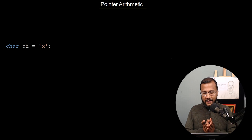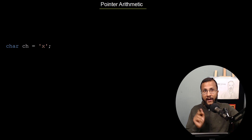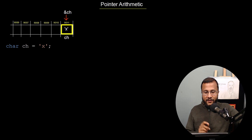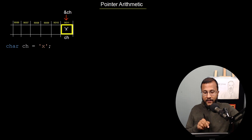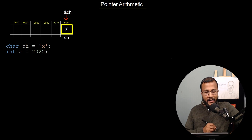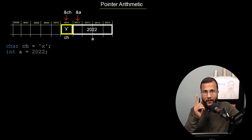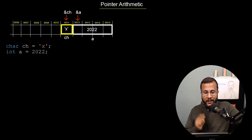To demonstrate the same, I've taken this example wherein I first declared a character variable ch which is holding the value character 'x'. Let's say ch is occupying the memory address 9011. It occupies just one byte, so the starting address is 9011, and inside 9011 the value 'x' is stored. Similarly, I create one integer variable a which is having the value 2022 stored in it, and a is occupying 4 bytes of memory starting from address 9012 up to 9015.